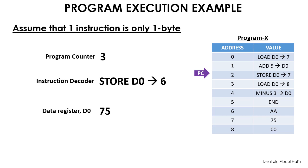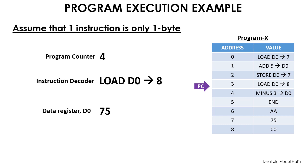The fourth fetch-execute cycle now starts with the program counter's value equal to 3. This value is put onto the address bus and now the program counter is pointing to address 3. The instruction to load the data at address 8 into d0 is sent to the instruction decoder through the data bus, and the program counter's value is incremented to 4. The decoded instruction causes the CPU to locate address 8 and move its contents into register d0. The value in d0 is now 0. This concludes the fourth fetch-execute cycle.